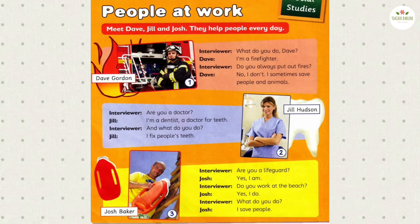Activity 1. Look at the text — this is an interview. You can find interviews in magazines. Look at the picture: what do you think the people are doing? Listen.